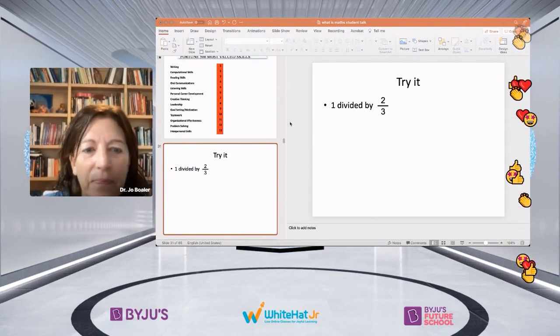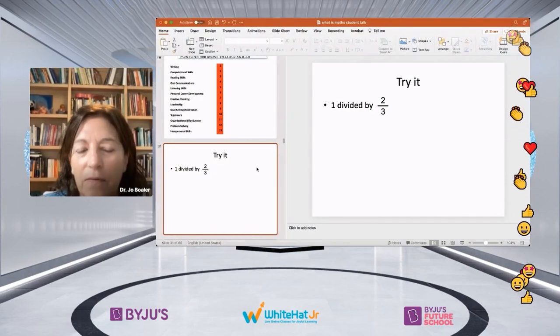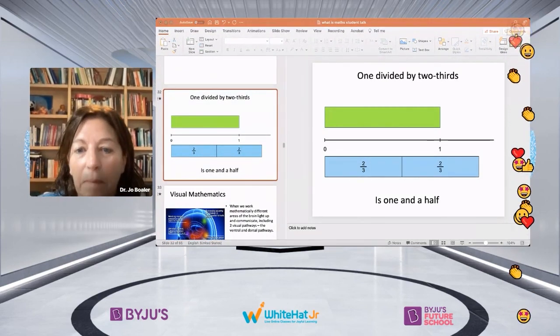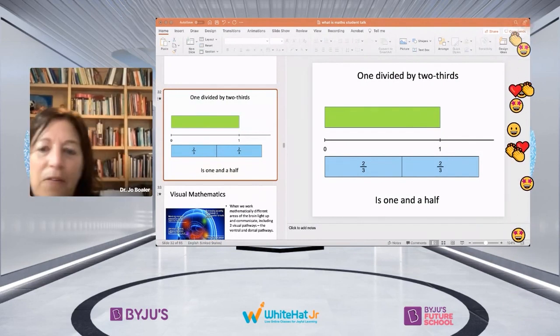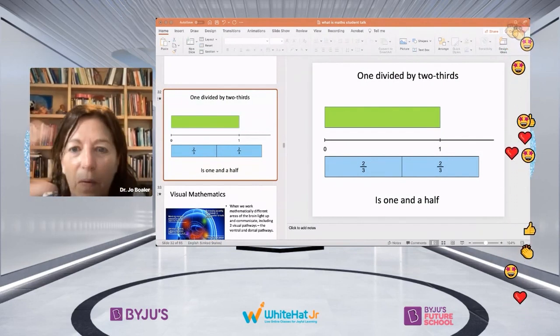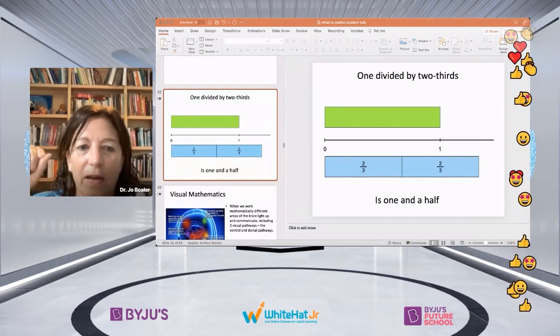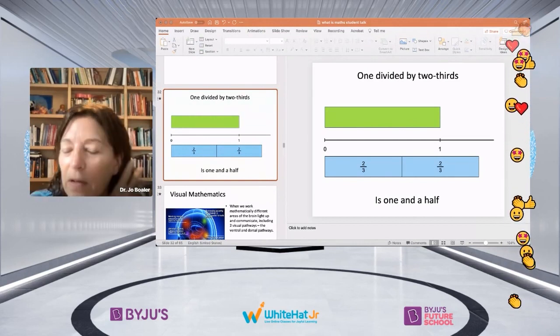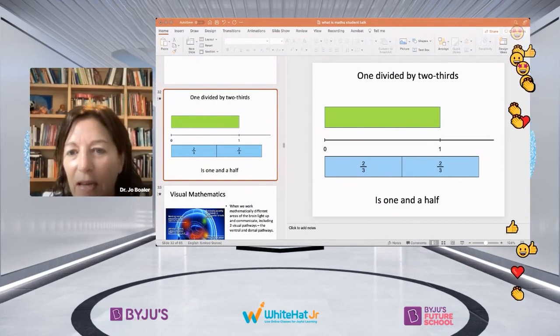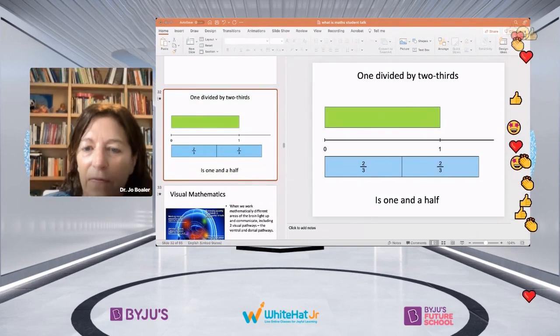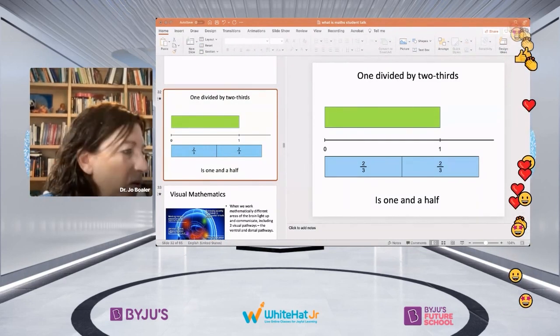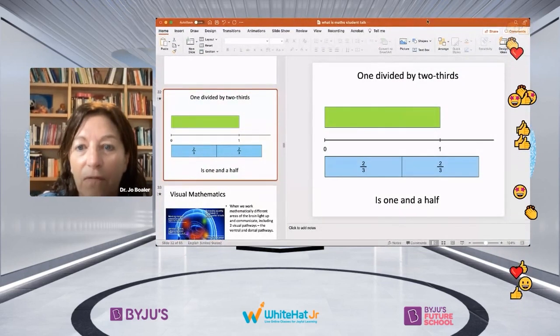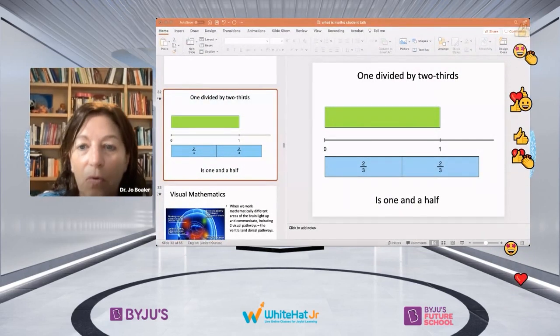But actually, there's a lovely visual approach to solving this problem. And I'm showing it to you here. If we think of one in this visual way as a rectangle, and we think of two thirds as a rectangle, we actually can see that one set of two thirds goes inside that rectangle, and then another half of that two thirds. That's why we know that one divided by two thirds is one and a half. And so thinking visually in those ways will really help you.